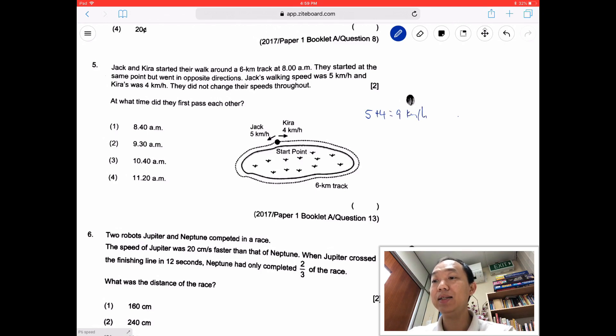So we take 5 plus 4 is actually equals to 9 kilometers per hour. And I want to find the time because this Jack will be traveling here and then Kira will be traveling here. And eventually they'll meet at one point. And we learned that when they are traveling to each other, we will add their speed. So that's why we take 5 plus 4 equals to 9. Next we want to find the time taken. Now this is a DST plus.